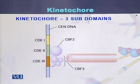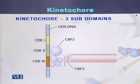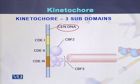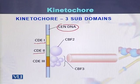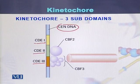If we look at the diagram of the centromere DNA, we can see three regions: CDE1, CDE2, and CDE3. These three regions are collectively present within the centromere DNA.